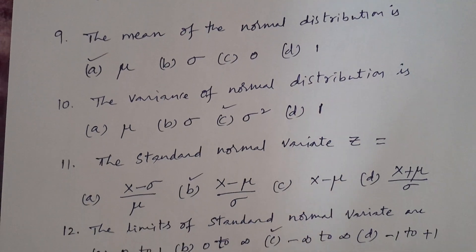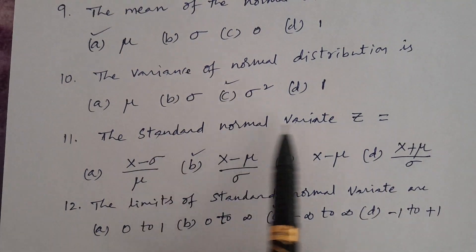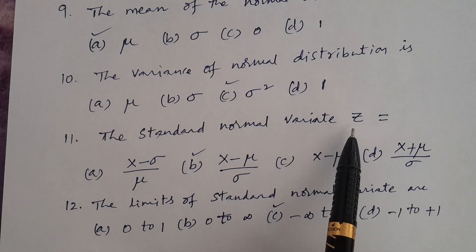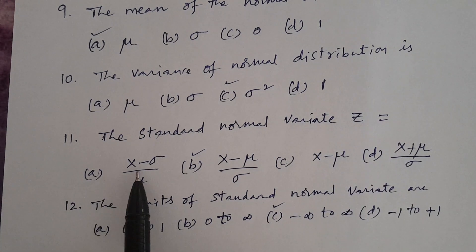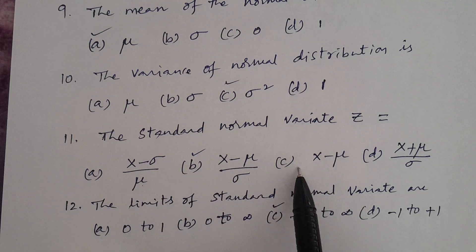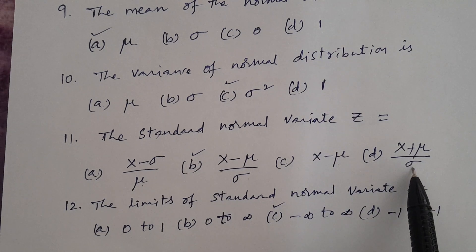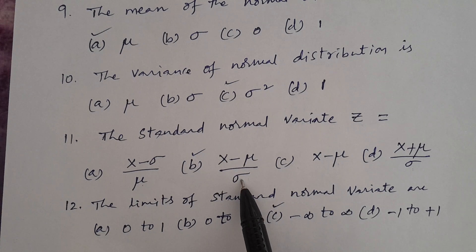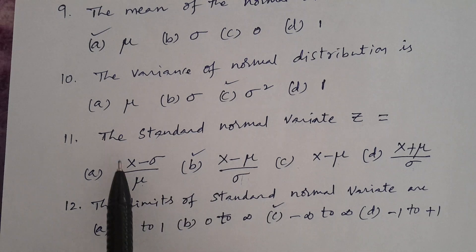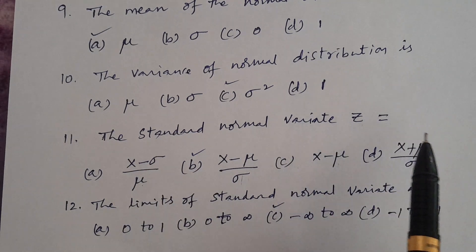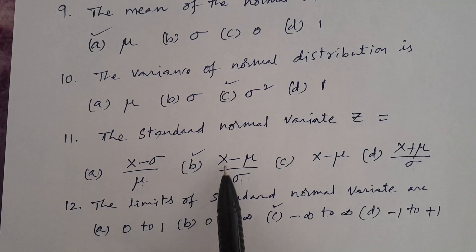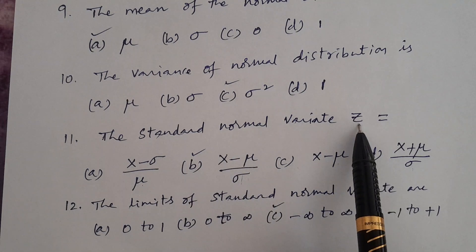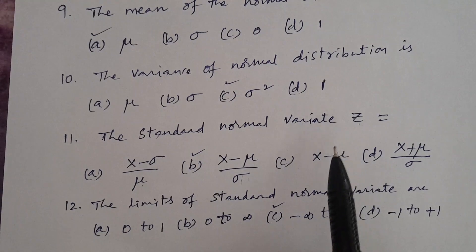Question number eleven. The standard normal variate Z is equal to? This is a very important question. Options: A. (X − σ)/μ, B. (X − μ)/σ, C. X − μ, D. (X + μ)/σ. The correct answer is B: Z = (X − μ)/σ. That is, the observation minus its mean divided by standard deviation. In Telugu: Z = (X − μ)/σ, which is X minus mean divided by standard deviation.